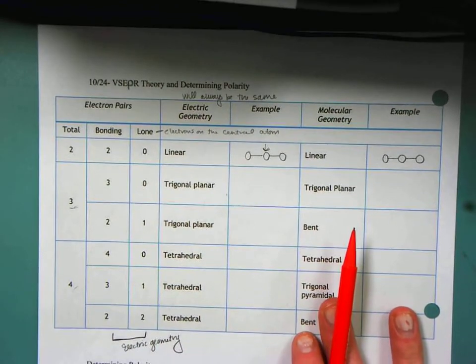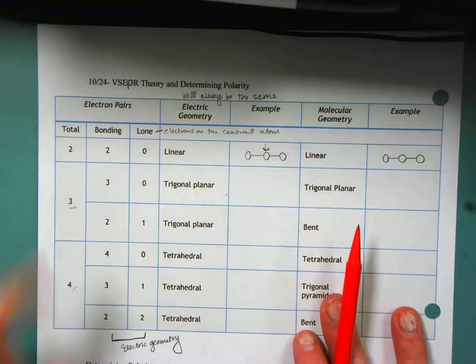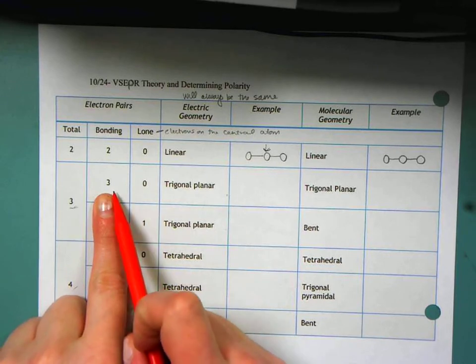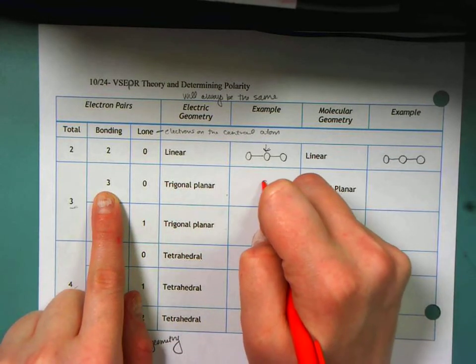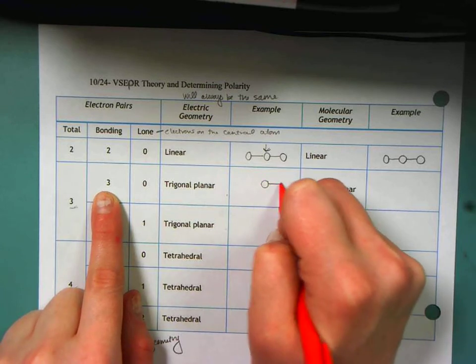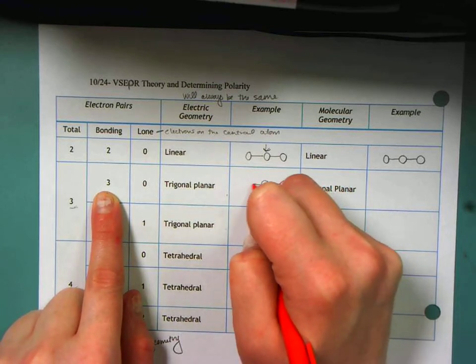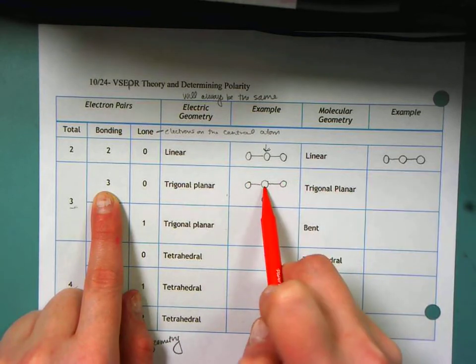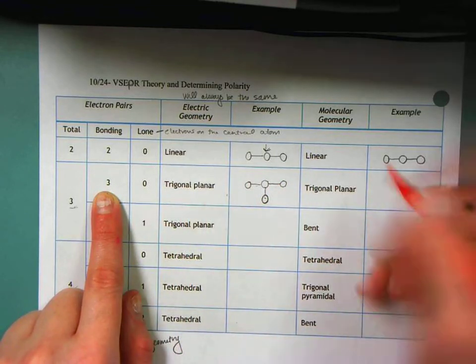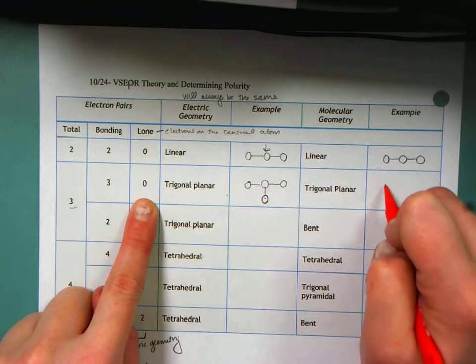So let's look at some examples. So trigonal planar, if I look at three bonds being made and zero lone pairs, my trigonal planar should look something like this. So I've got my central atom that is making three bonds. And I don't have any lone pairs, so my molecular geometry would also be the same.